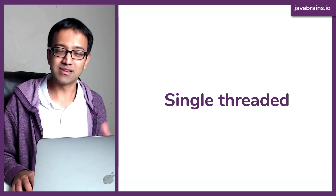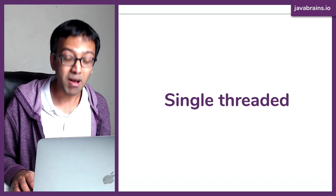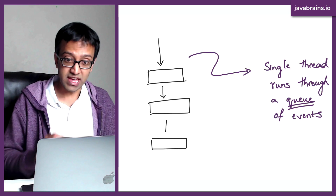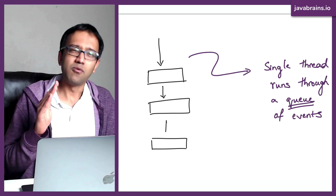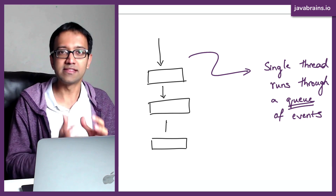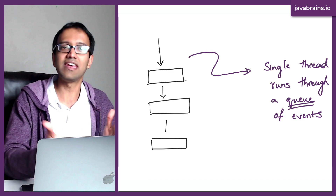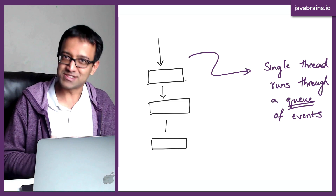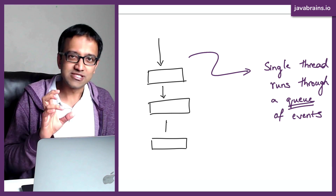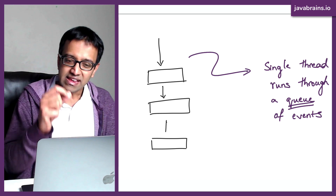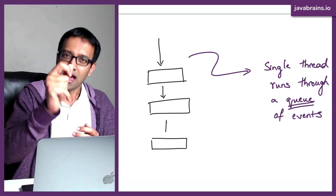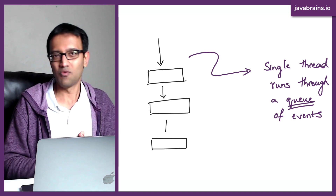This is very different from other similar programming platforms which are multi-threaded, where multiple threads operate at the same time. That's not what happens in Node.js. In Node.js, you have a single thread and it actually runs through a queue of events. Let's say you have a function — something like a equals b plus c. Whatever needs to execute gets queued up. There is a queue of events, and that single processing thread executes each and every event one by one in that queue.